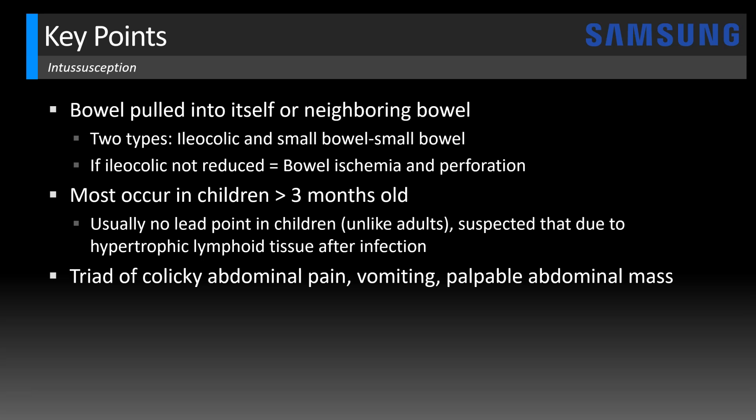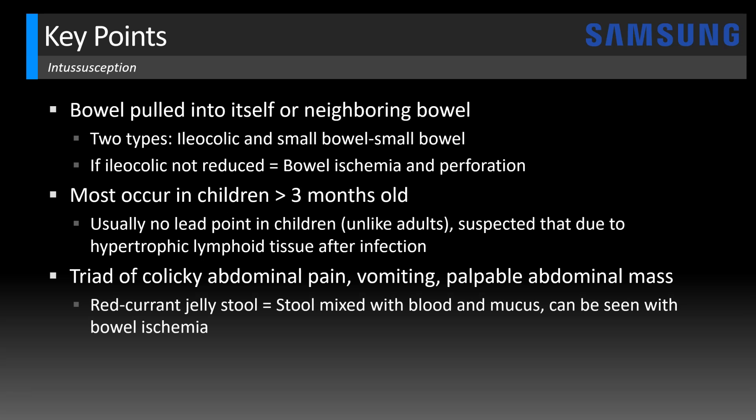Classically these patients present with a triad of colicky abdominal pain, vomiting, and a palpable abdominal mass — but that's actually seen in fewer than 50% of patients. There may also be a history of red currant jelly stool, which is stool mixed with blood and mucus, and that can be seen in the setting of bowel ischemia. The treatment for ileocolic intussusception is enema with air or contrast material. In this case the patient was successfully treated with an air enema and the ileocolic intussusception was reduced.